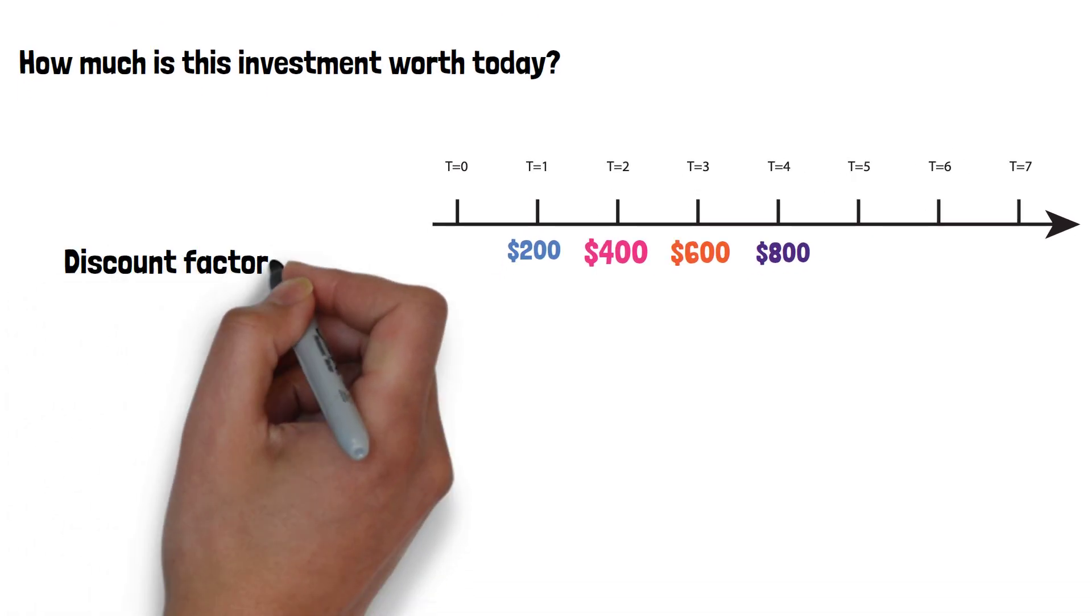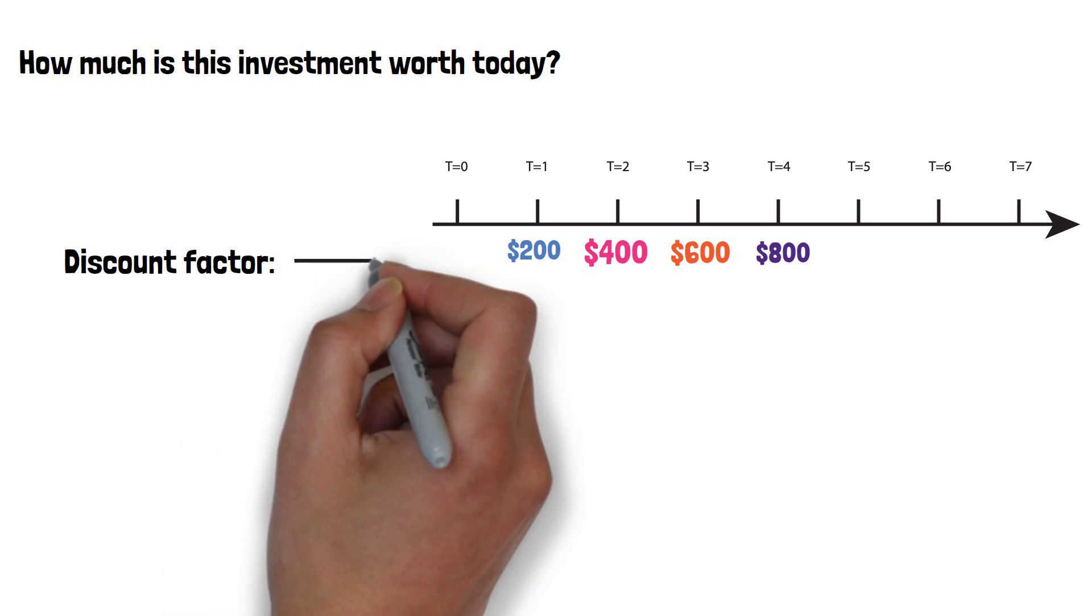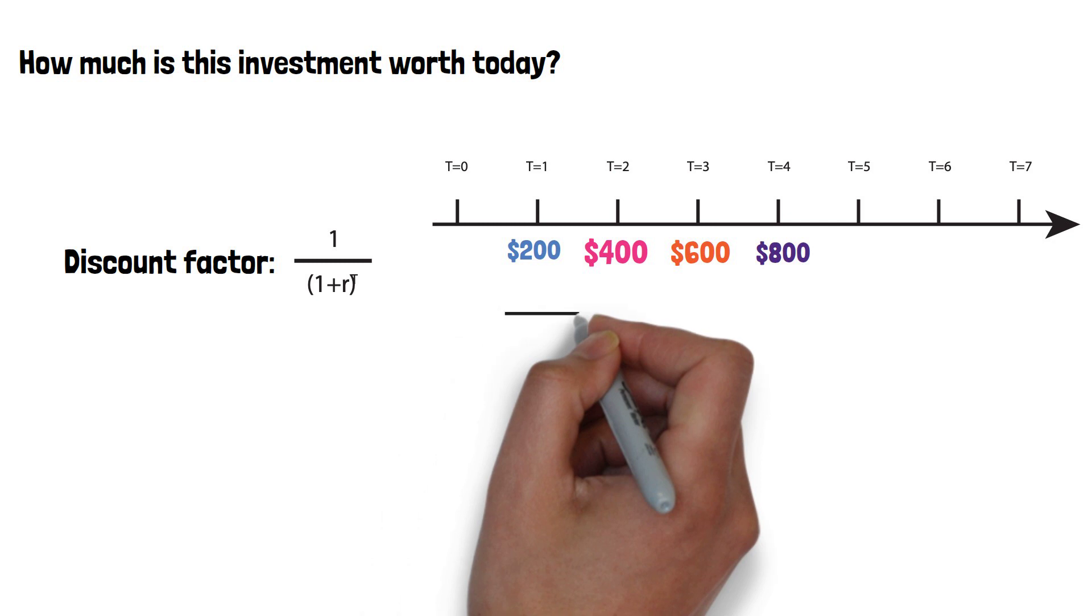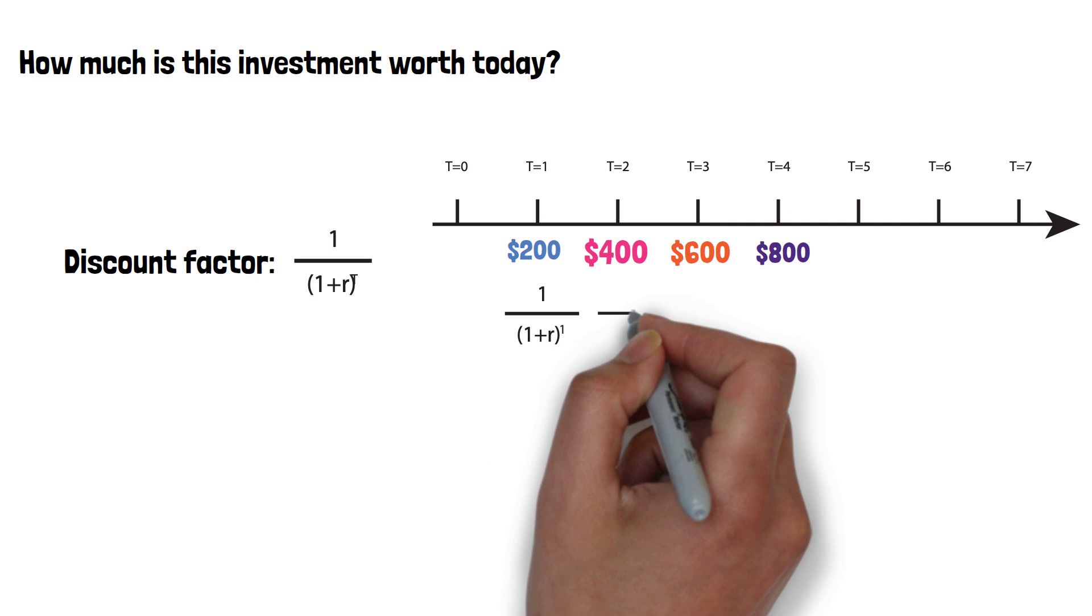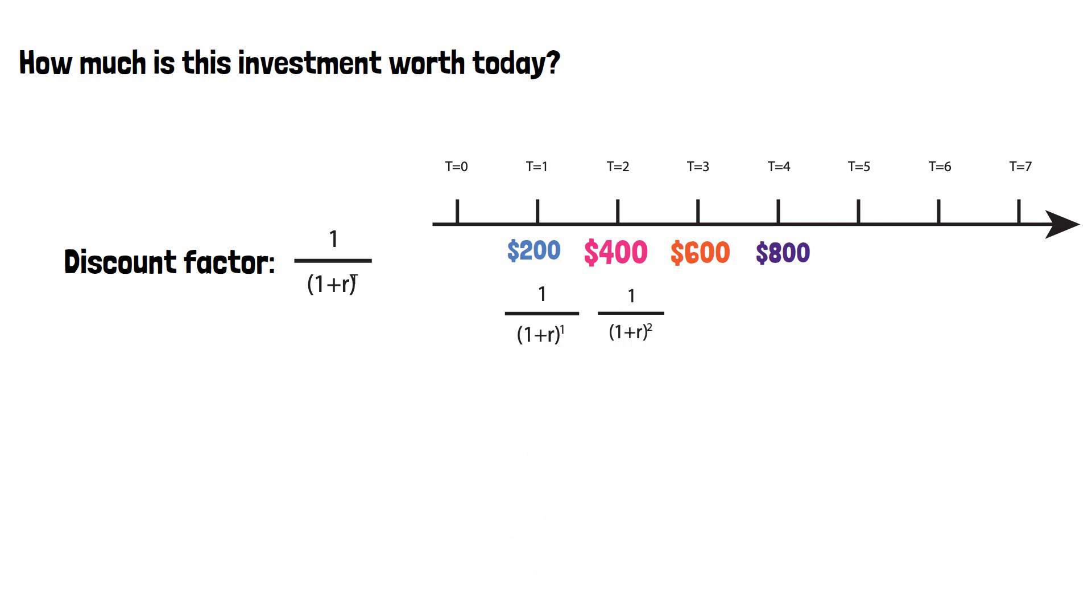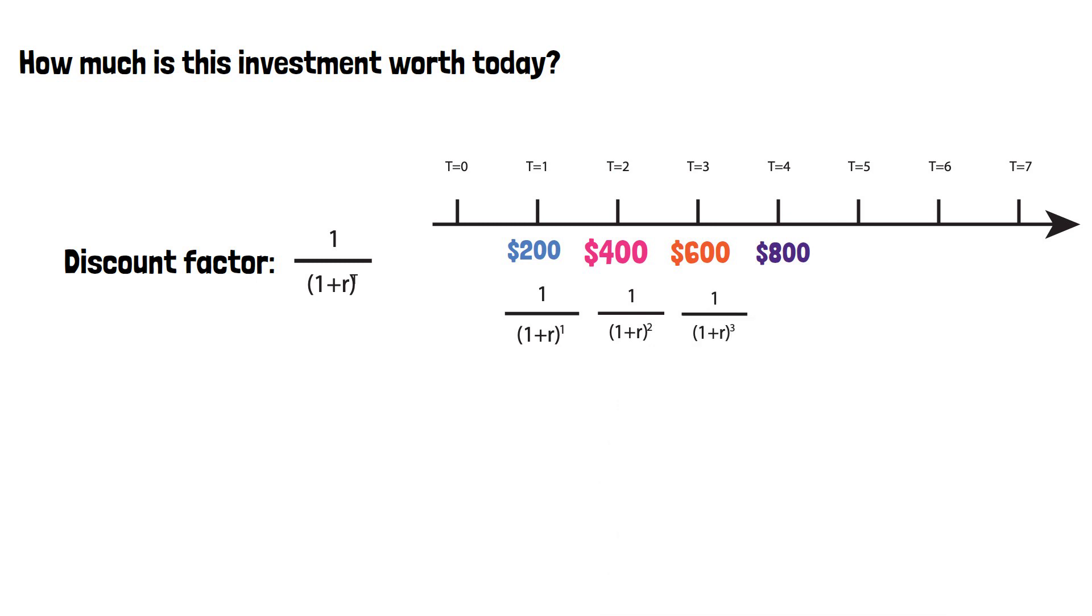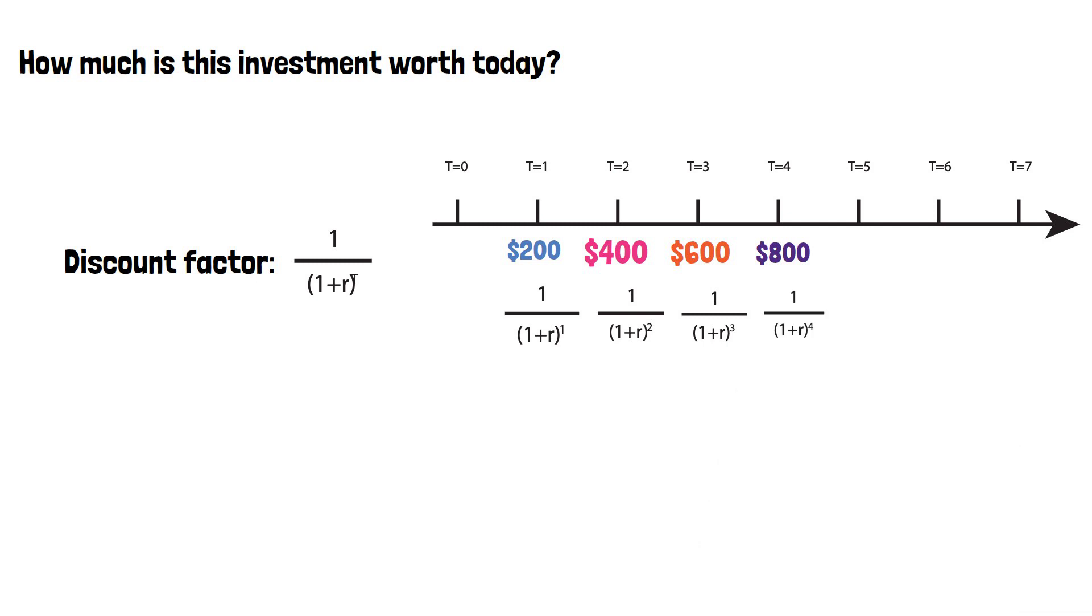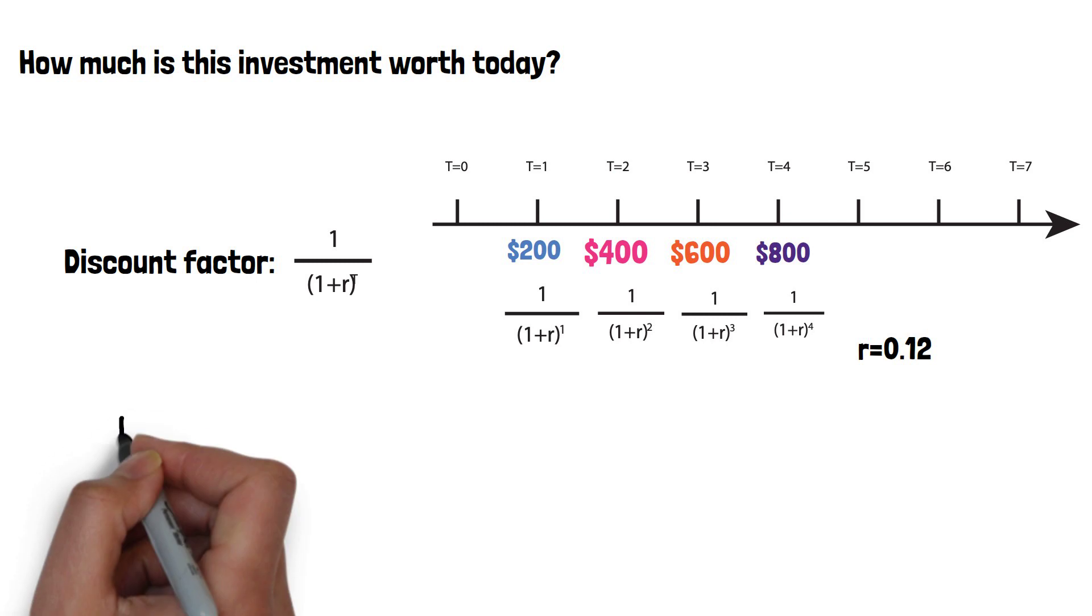So to calculate the present value, we need to know the discounting factor. That's 1 over 1 plus r to the power of t, where t represents the number of time intervals. Therefore, we know the discount factor at the four time points for each single cash flow. We know that r equals 12%.